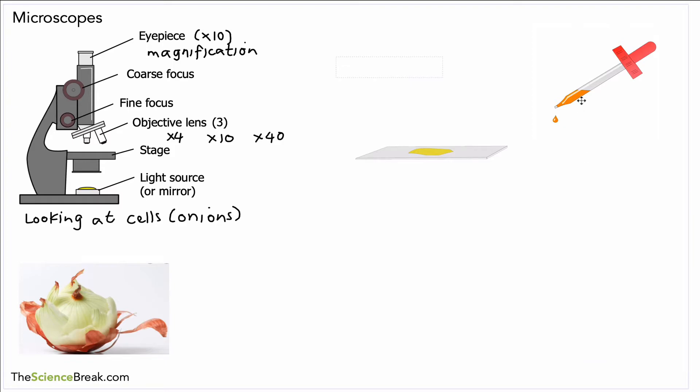Once we've done that, there's one more little step we have to have, which is to add some dye. The dye is really important because it gives color to the different parts of the cell so it's much easier to see.